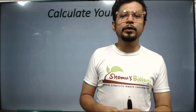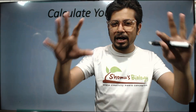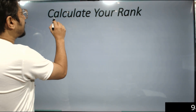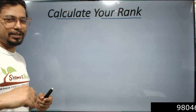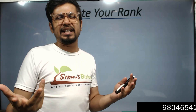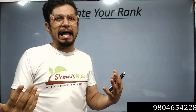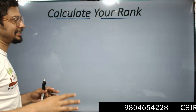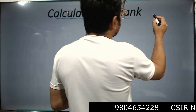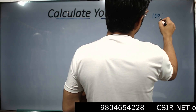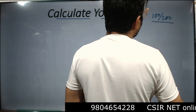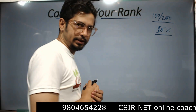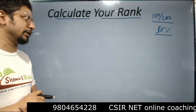Welcome to Shomo's Biology. In this video, I'm going to answer one of the most demanded questions: when CSIR declares the percentile score, how do you calculate the rank from the percentile score? Personally, I don't like percentile and I really don't know why they declare life science scores only in percentile while the rest of the scores are in percentage. It's quite easy to understand if you scored, say, 100 out of 200 — that's 50 percent.